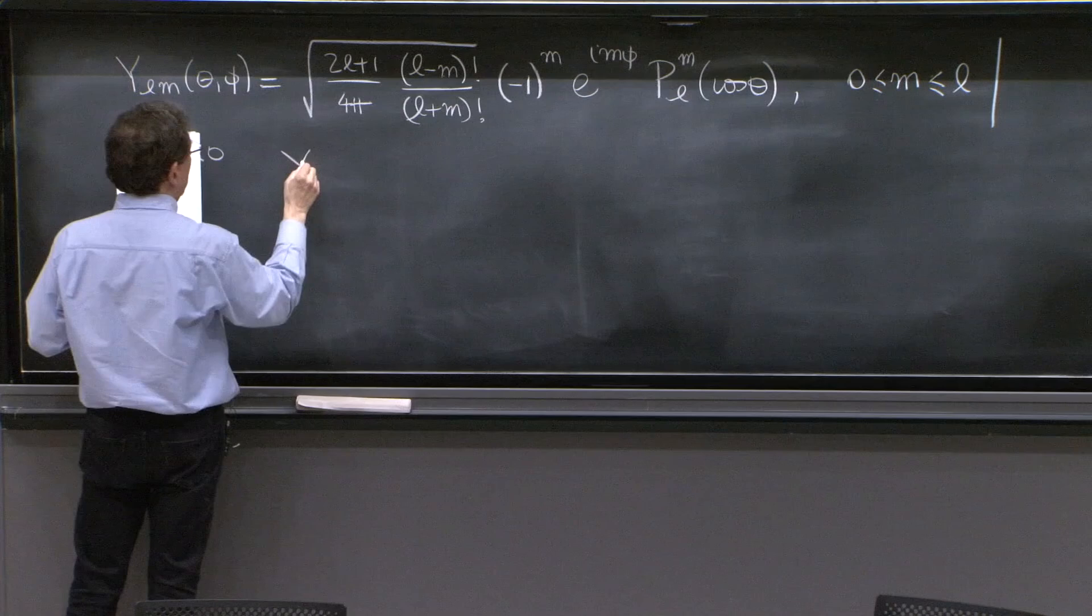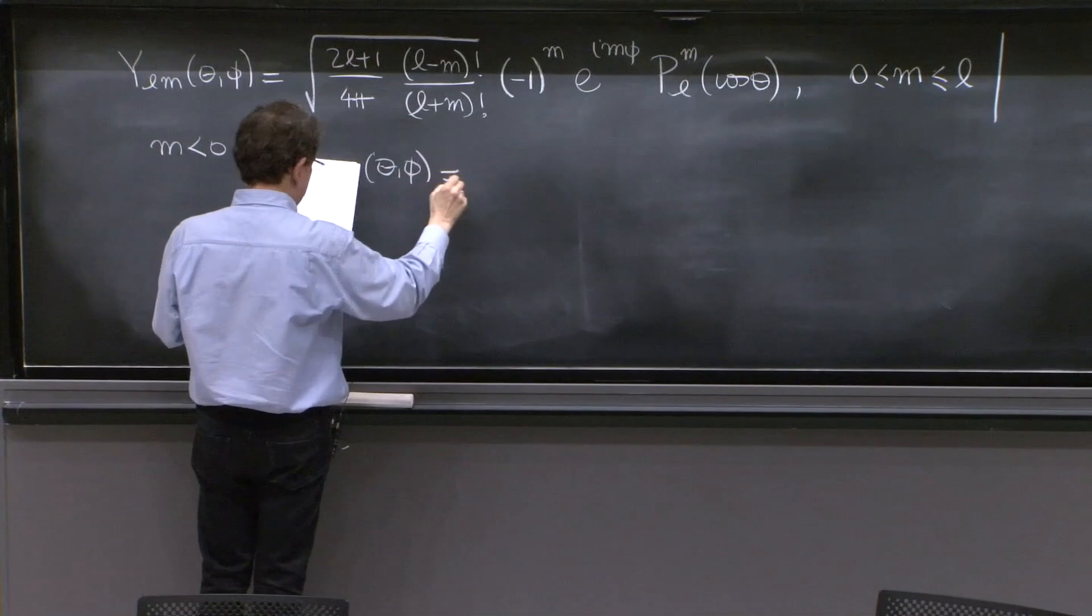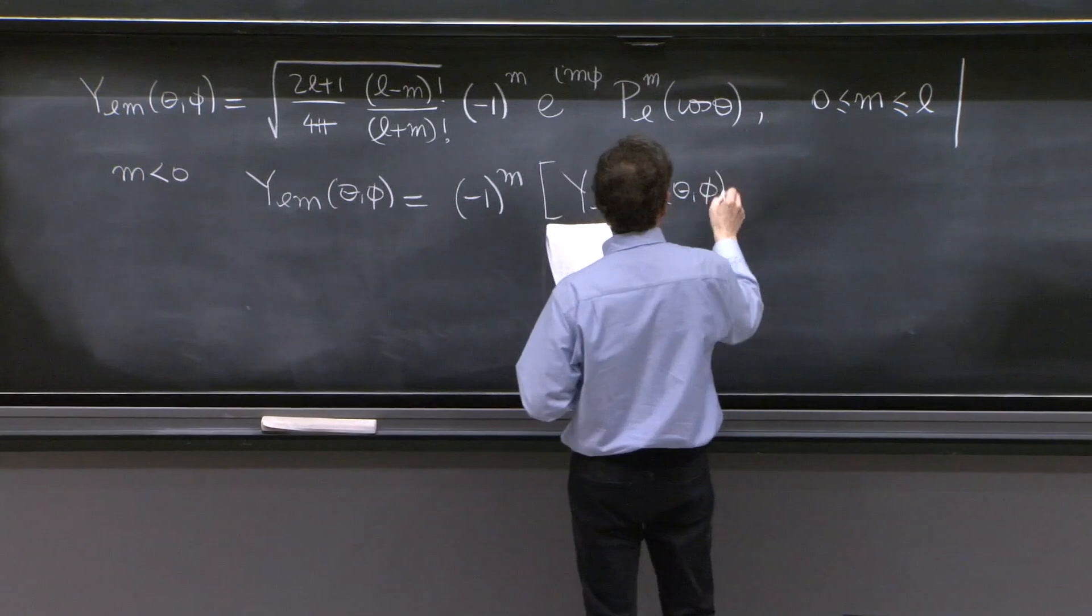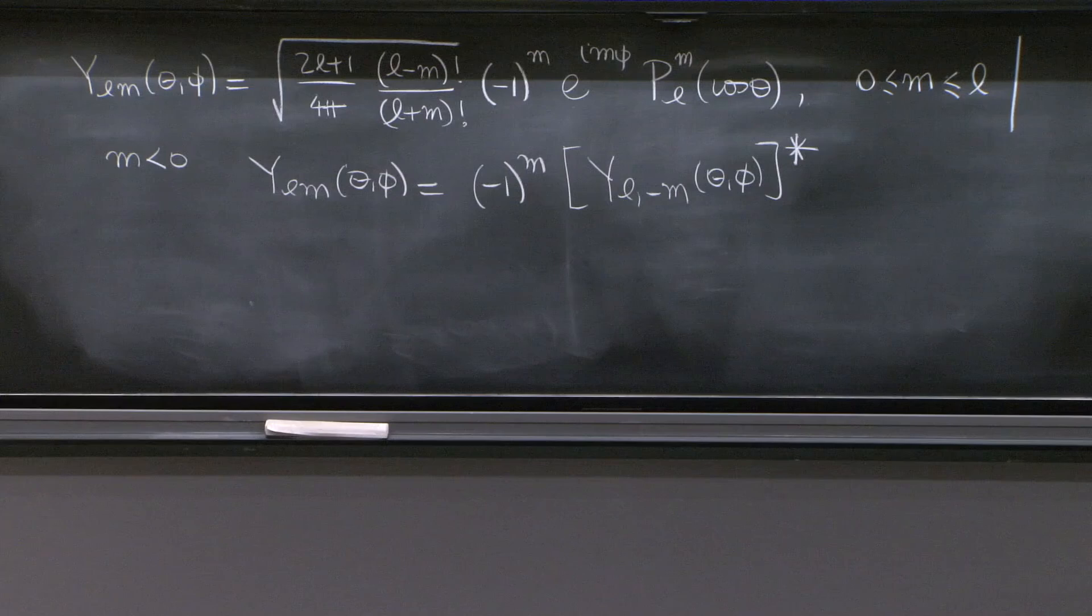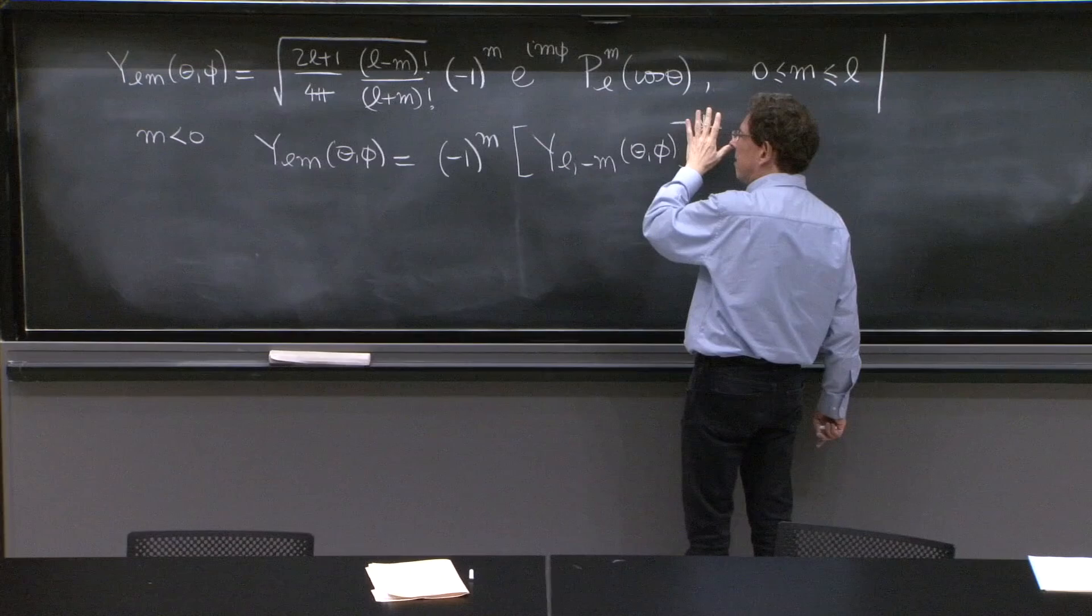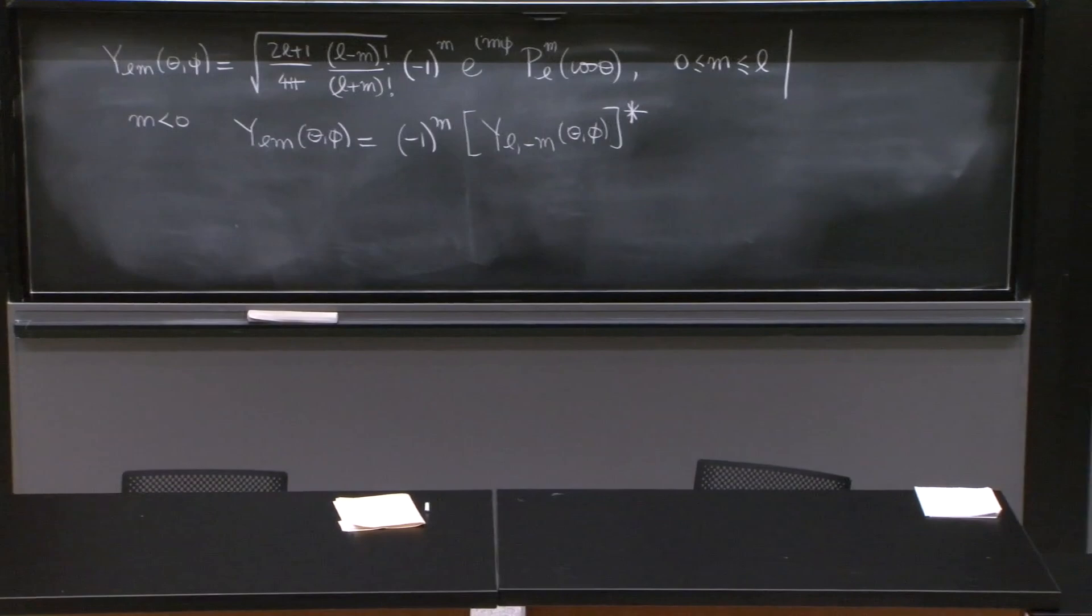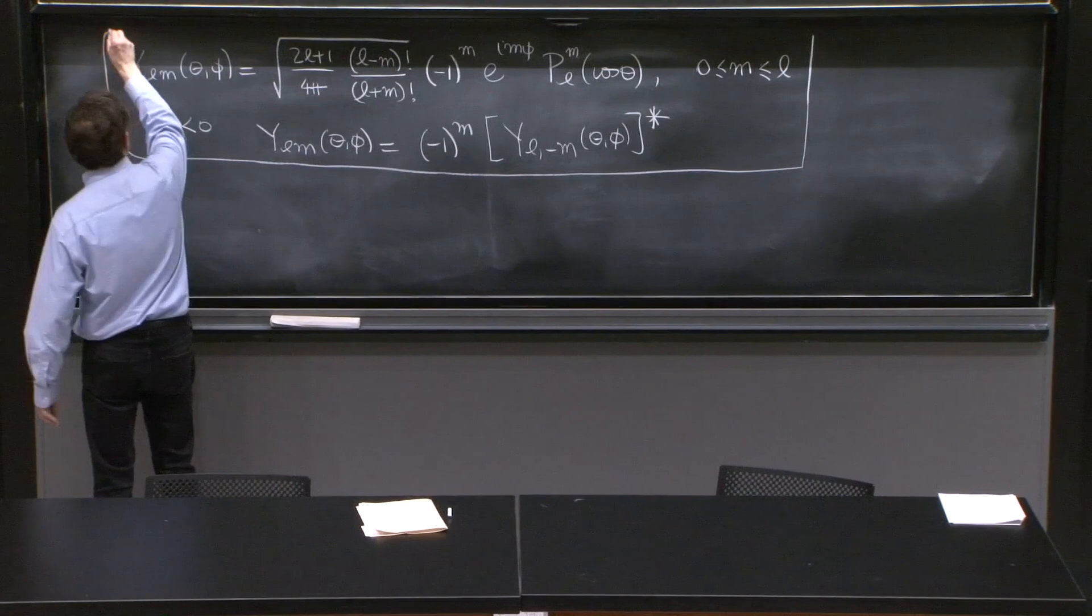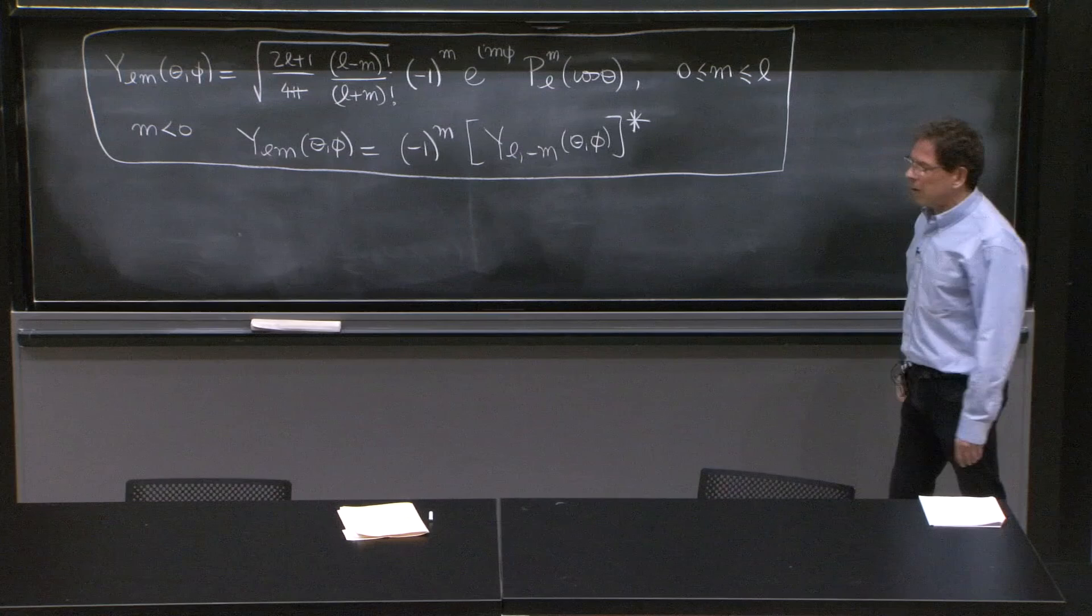For m less than 0, ylm of theta and phi is minus 1 to the n yl minus m of theta and phi complex conjugated. OK, well, if m is negative minus m is positive, so you know what that is. So you could plug this whole mess here. I don't advise it. It's just for the record. These polynomials are complicated, but they are normalized nicely. And we just need to understand what it means to be normalized nicely. That is important for us. The specific forms of these polynomials, we can find them.